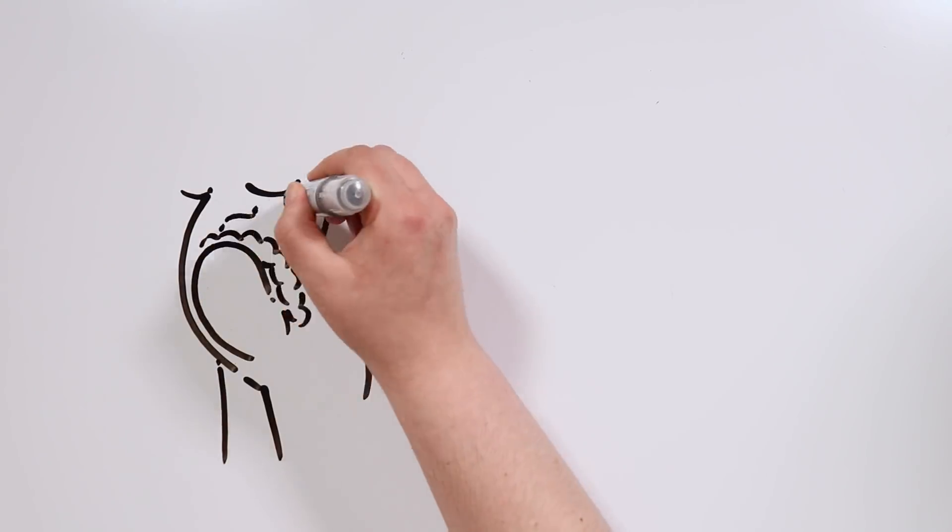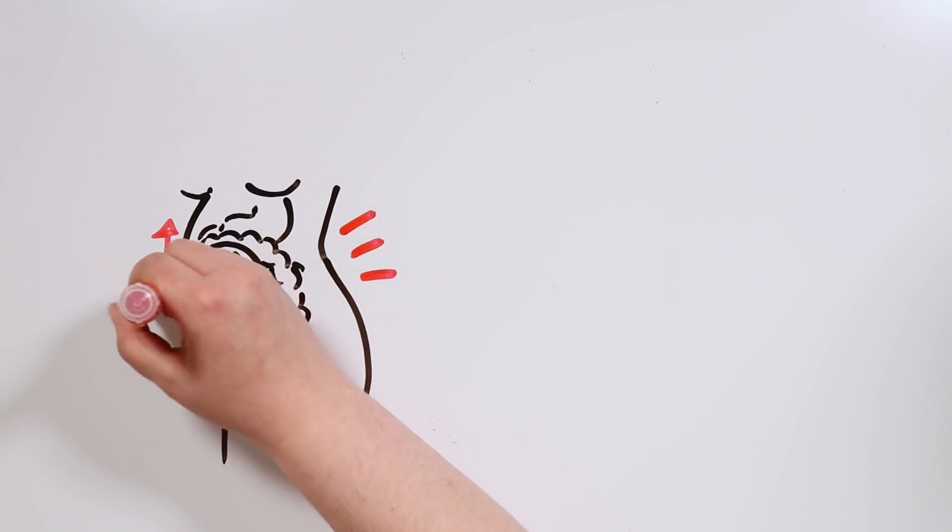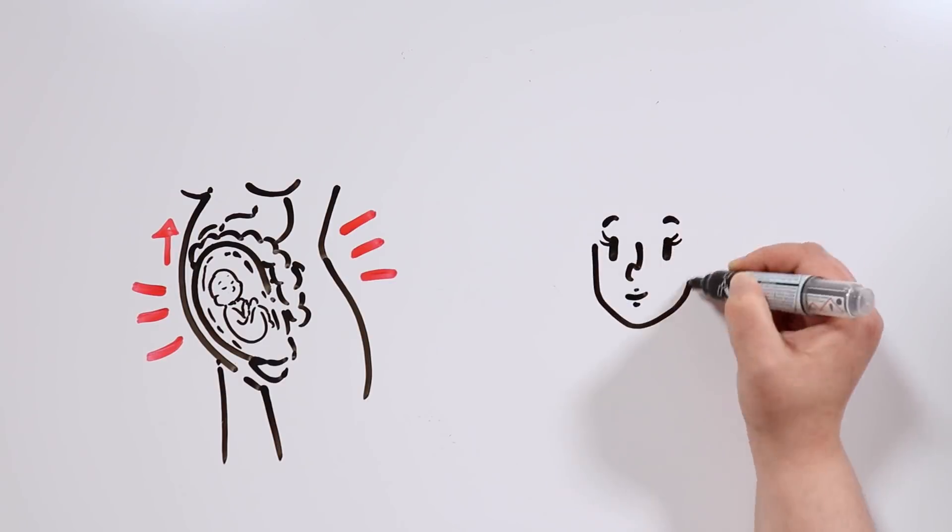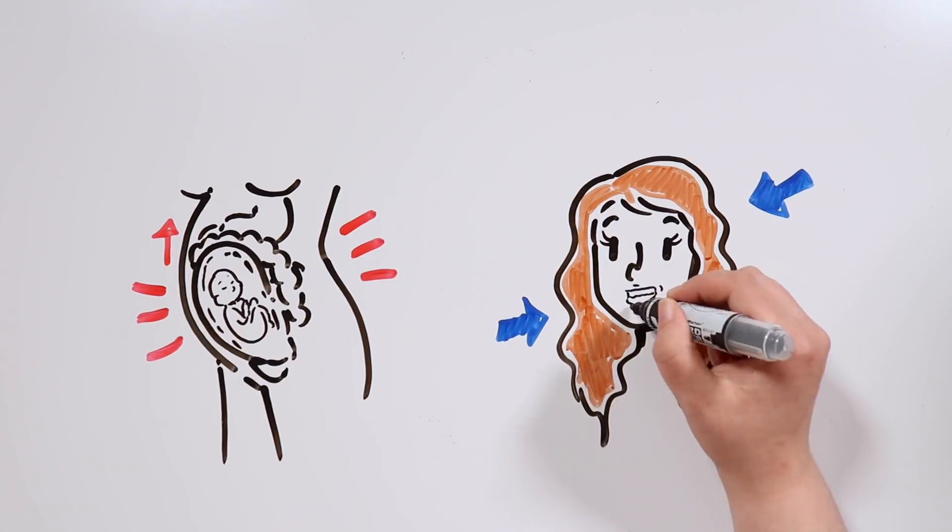The uterus, where the baby is developing, starts exerting pressure on other organs, which can result in worse digestion. The woman will also start growing more hair, and her gums and nose will become more sensible, even to the point of bleeding.